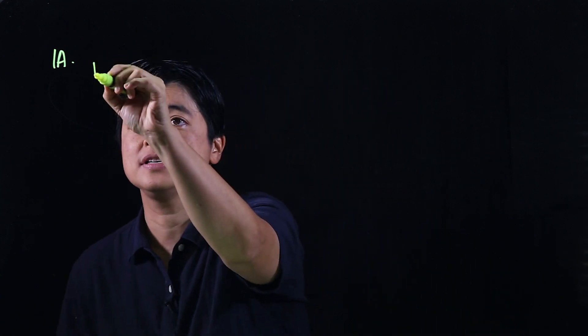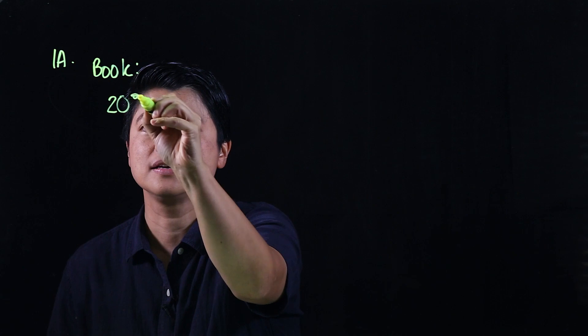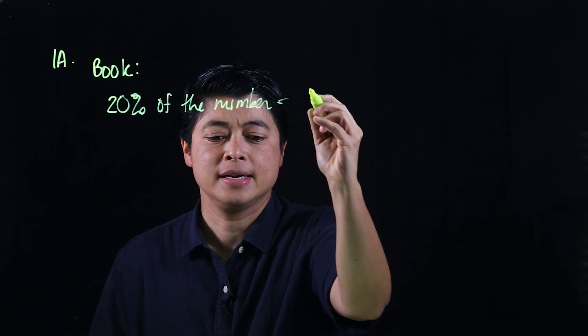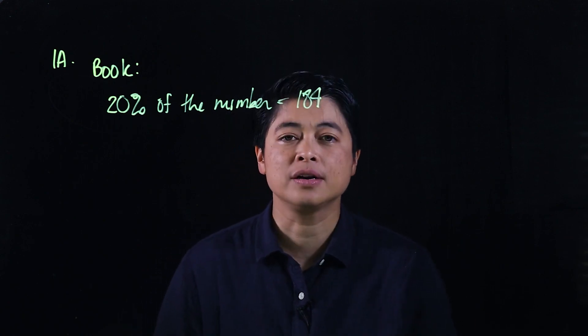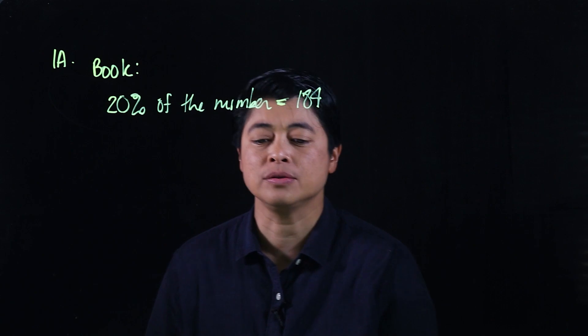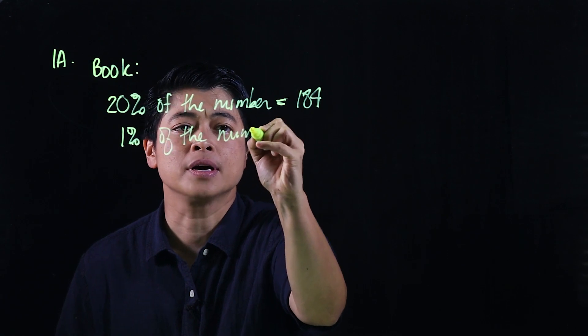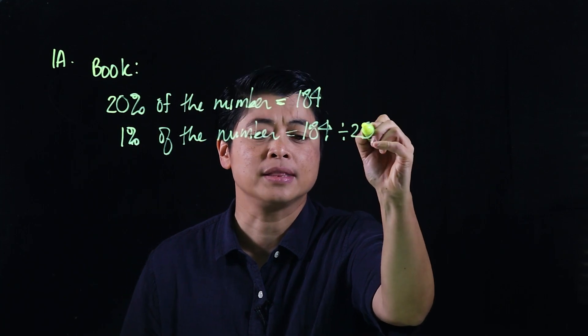Problem 1a says 20 percent of a number is 184, what is the number? The book says 20 percent of the number is equal to 184. That is here is the equal to. Which means 1 percent of the number is equal to 184 divided by 20.